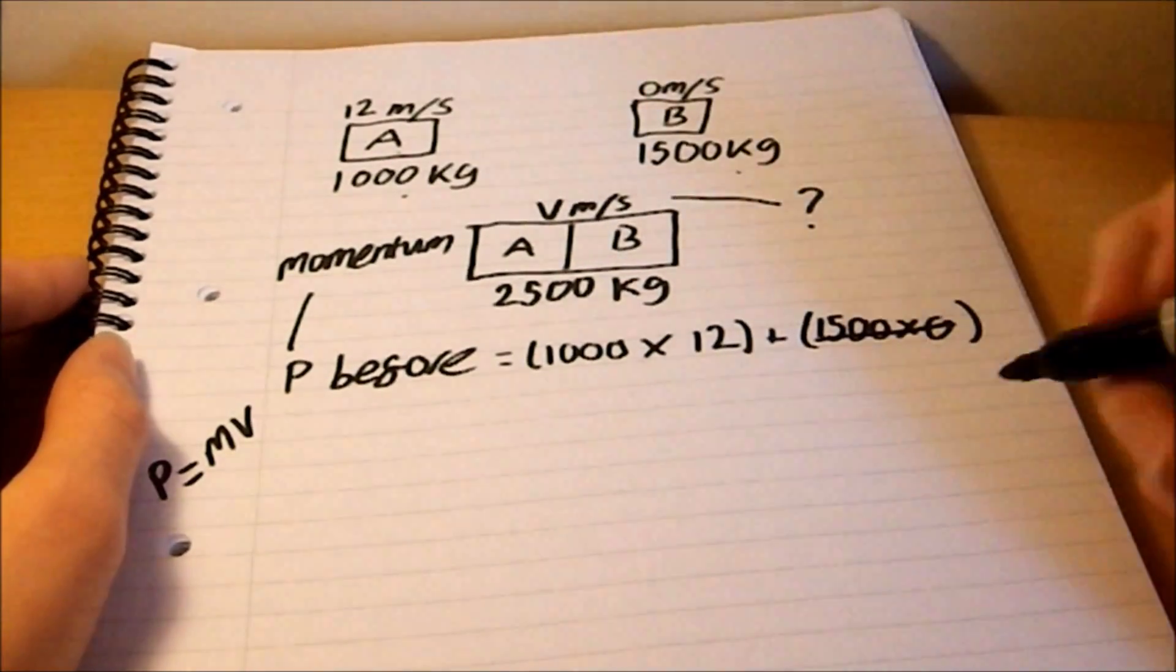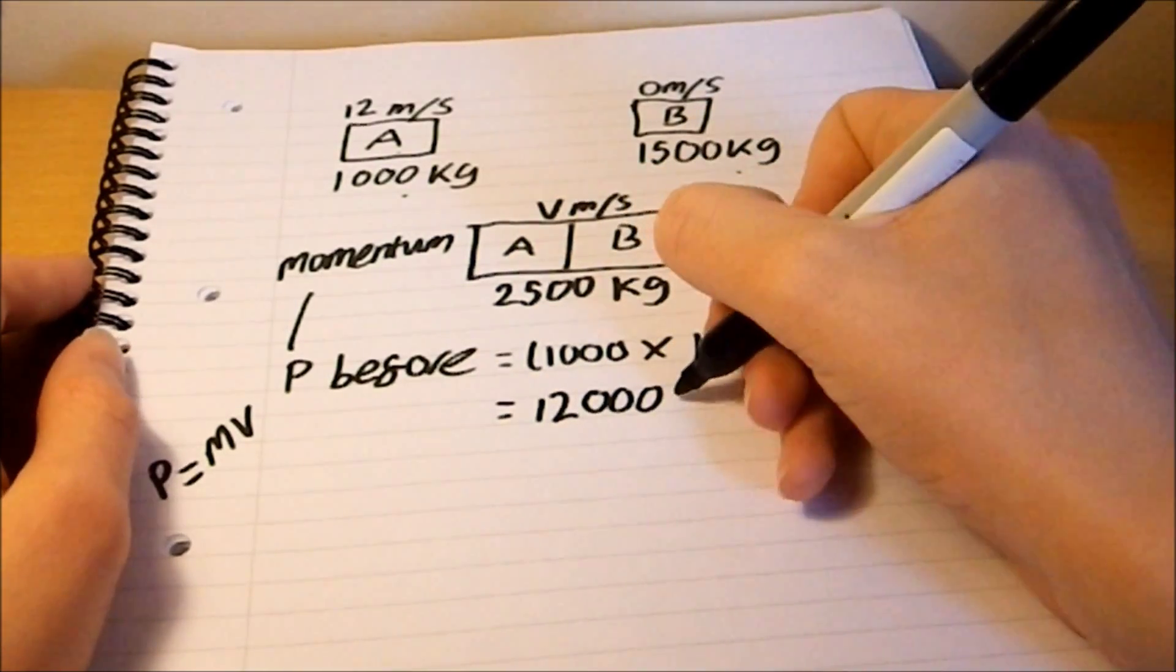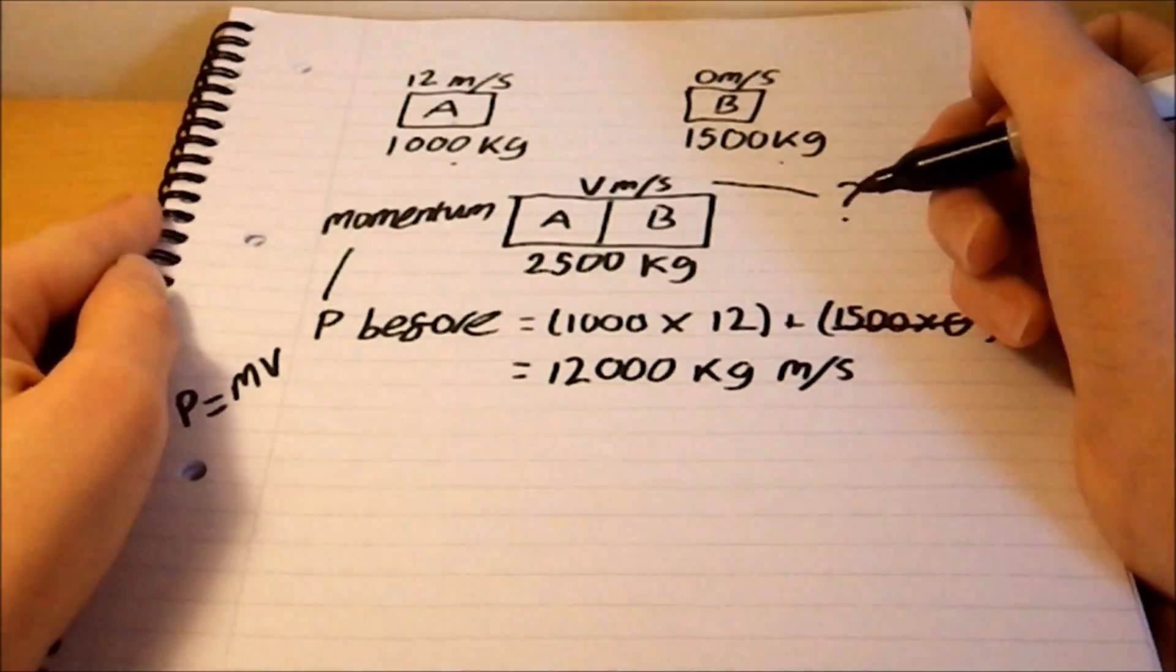But wait, the speed's 0, so we don't need to do that. We can just work out the momentum of car A, which is 12,000 kilograms meters per second.